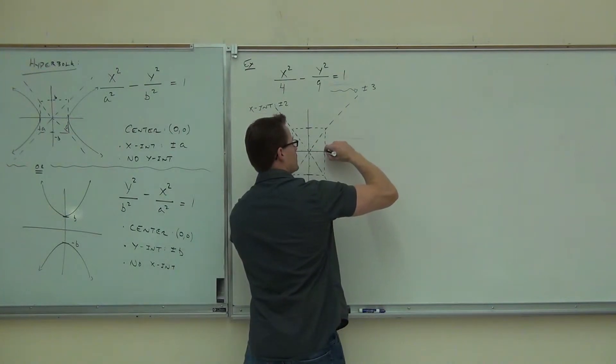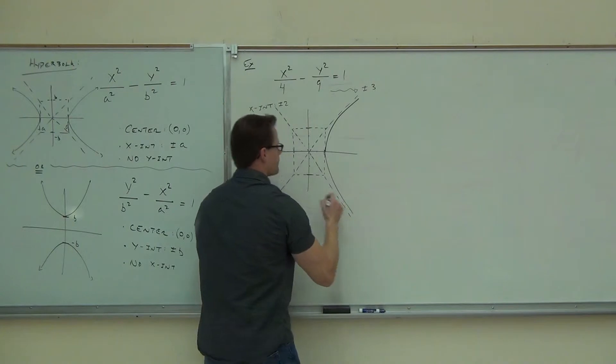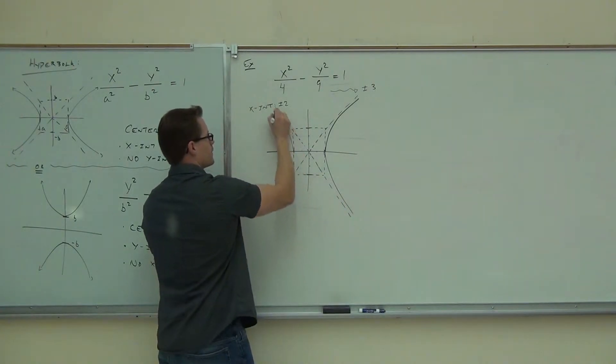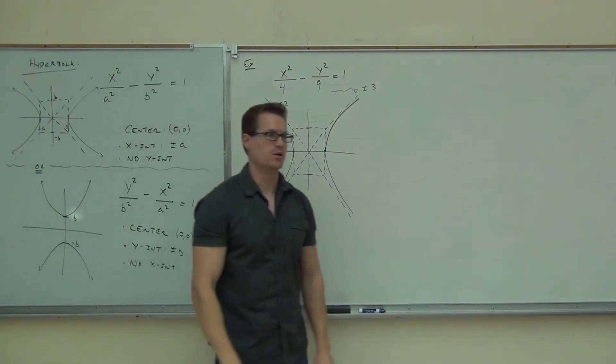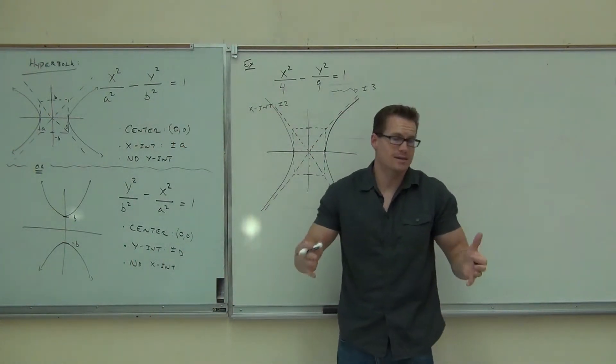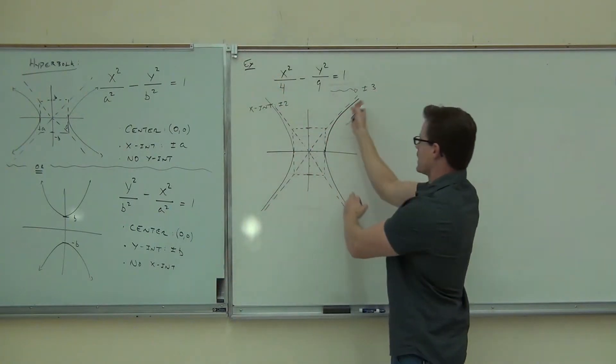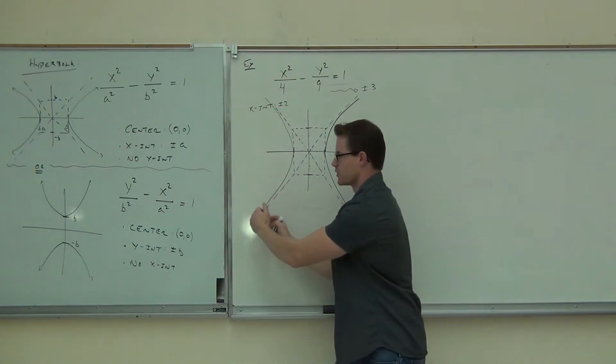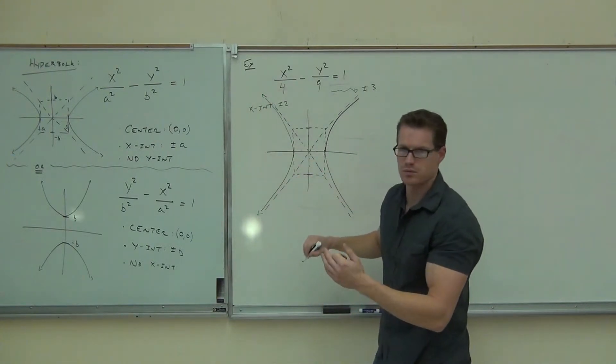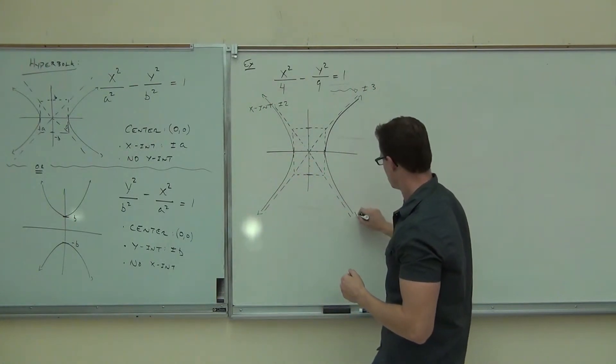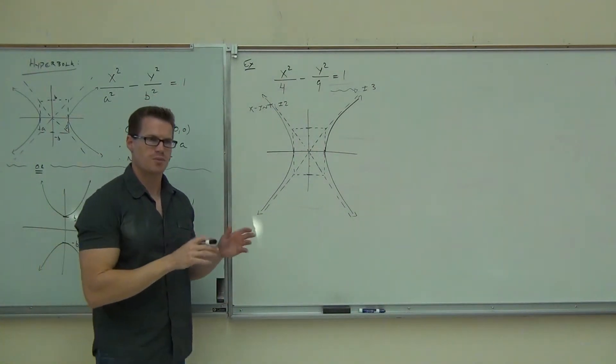So you go like this, and you follow that, and you follow that. That's actually how the hyperbola looks. It's not a parabola. It's going out forever like that and like that. It's getting closer and closer to those diagonal lines. Is it ever going to touch them? No. But it follows them.